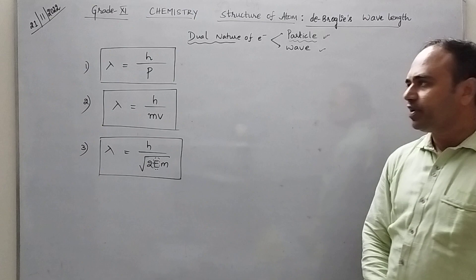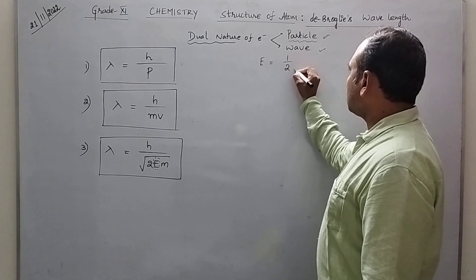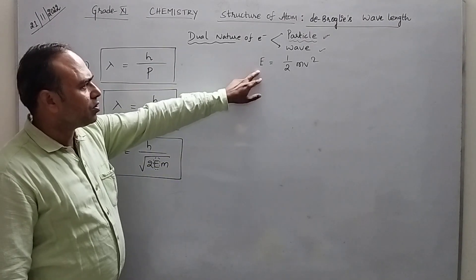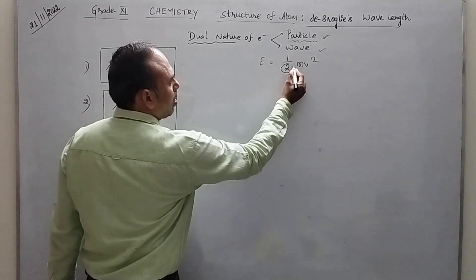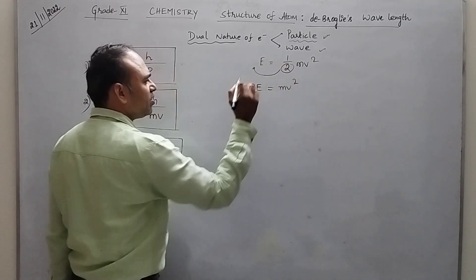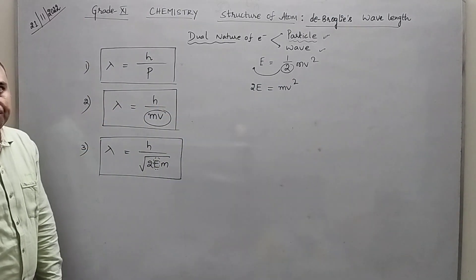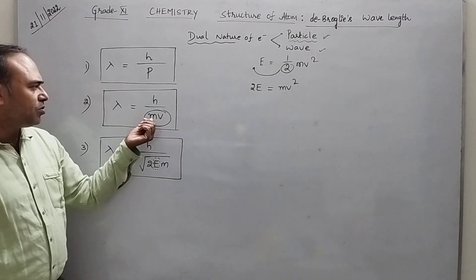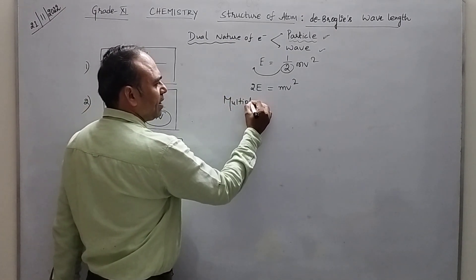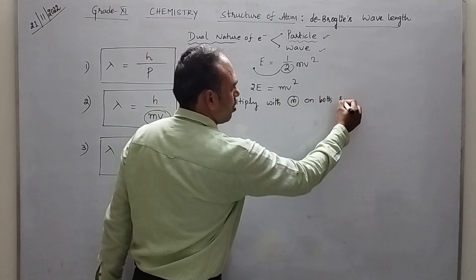To derive the relation between lambda and kinetic energy, we know that kinetic energy is equal to half MV squared. I am writing kinetic energy as E. So E is equal to half MV squared. Sending this to the other side, we get 2E is equal to MV squared. Our target is to find out the value of MV so that we can substitute MV here. Now let us multiply with M on both sides.